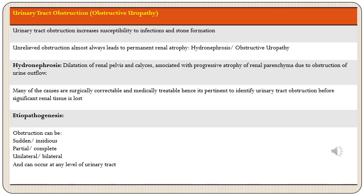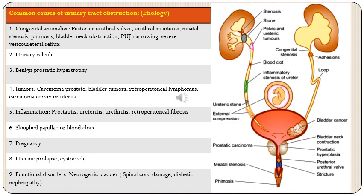Obstruction can be sudden or insidious, partial or complete, unilateral or bilateral, and can occur at any level of the urinary tract. Congenital anomalies causing obstruction can occur anywhere in the urinary tract, including posterior urethral valves, urethral strictures, meatal stenosis, phimosis, bladder neck obstruction, pelviureteric junction narrowing, and severe vesicoureteral reflux.